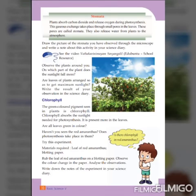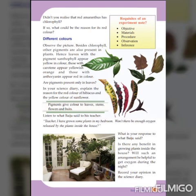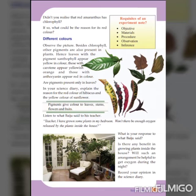Like stomata, another important factor in photosynthesis is a pigment named chlorophyll. Chlorophyll is a green coloured pigment seen in plants — it gives green colour to the leaves and absorbs the sunlight needed for photosynthesis. Besides chlorophyll, other pigments are also present in plants. Leaves with the pigment xanthophyll appear yellow in colour, those with carotene appear yellowish-orange, and those with anthocyanin appear red in colour. So, different pigments give different colours to the leaves.